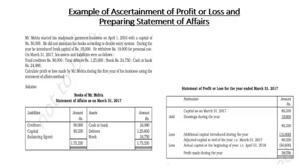The first example: Mr. Maitha started a readymade garment business on 1st April 2016 with a capital of 50,000. Since this is the starting capital, it is called the opening capital. Mr. Maitha is not maintaining the double-entry system, which means you have to calculate the profit using the single-entry system or incomplete records. During the year, he introduced fresh capital of 15,000 — this is called additional capital.